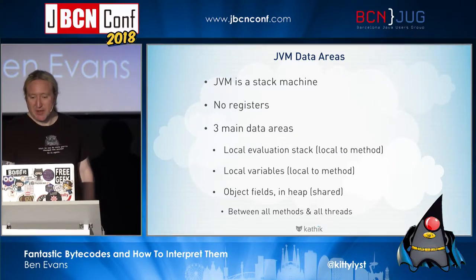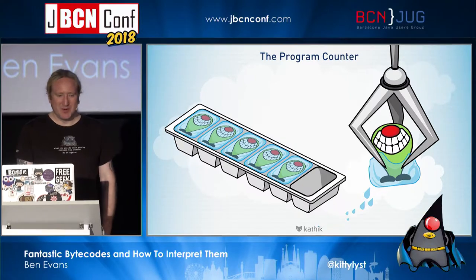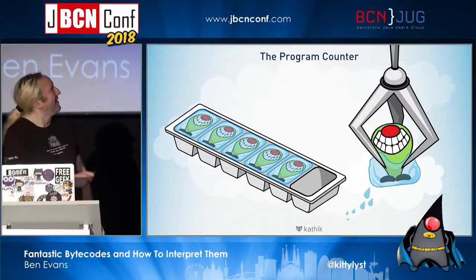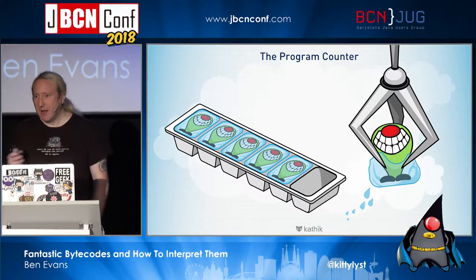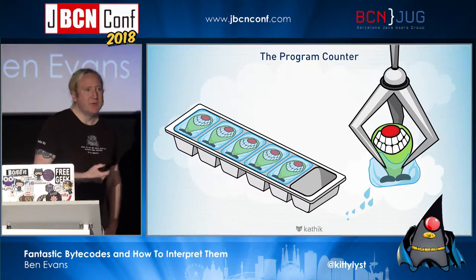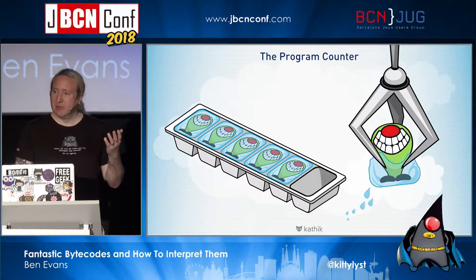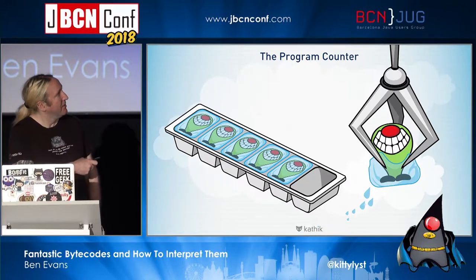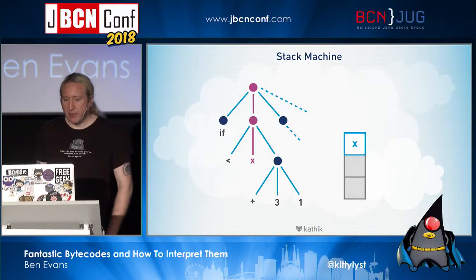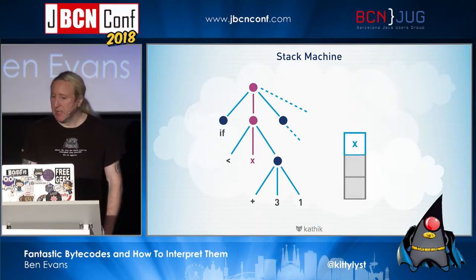The program counter - like the claw from Toy Story - takes each bytecode out of the ice-cube tray array and executes them one by one. If you studied interpreters or compilers at university, that's exactly how a basic interpreter is built: take a byte from the stream, examine it, switch on it, execute that bytecode, loop round, take the next one. The claw grabs these bytecodes and executes them, walking through the stack machine to execute program code by executing each bytecode in turn.